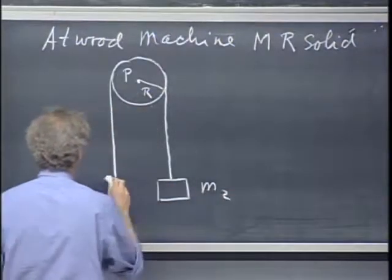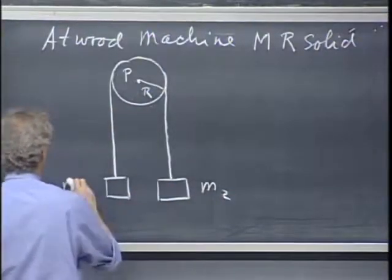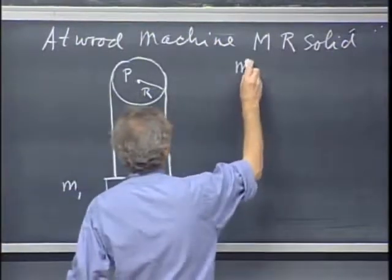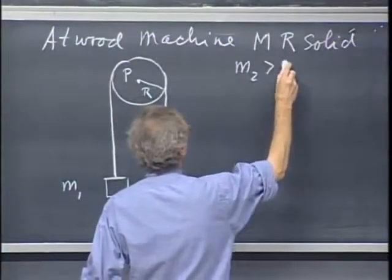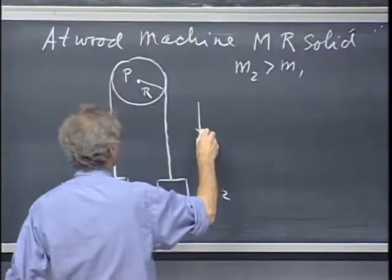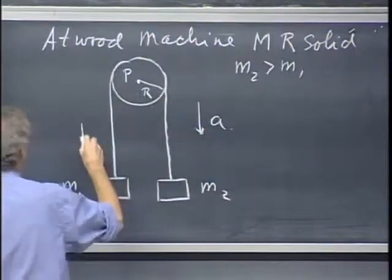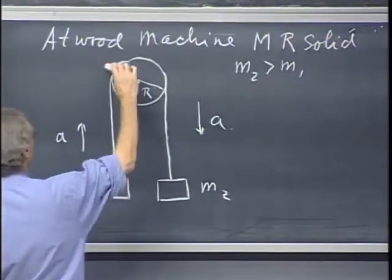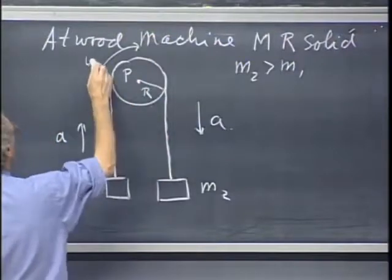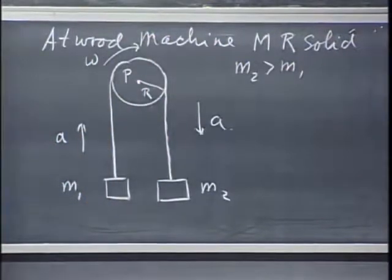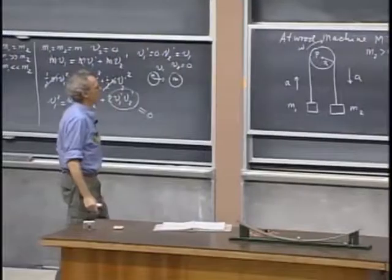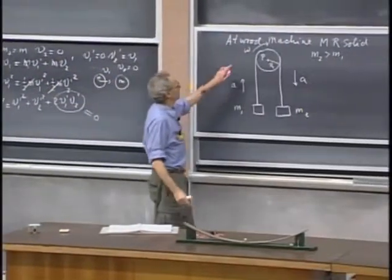Mass m2 is here and mass m1 is here. Let's assume that m2 is larger than m1, so this will be accelerated in this direction, this will be accelerated in this direction, and this will start to rotate with angular velocity omega, which will be a function of time.